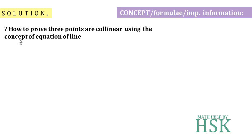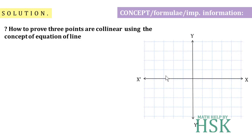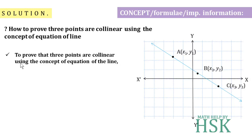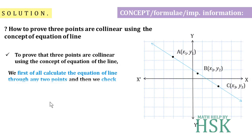For this, I take a coordinate axis and mark three points A, B, and C. Since we are not going to use specific coordinates yet, it is meaningless to discuss them. To prove that three points are collinear using the concept of equation of a line, we first calculate the equation of a line through any two points — in this case, points A and B.